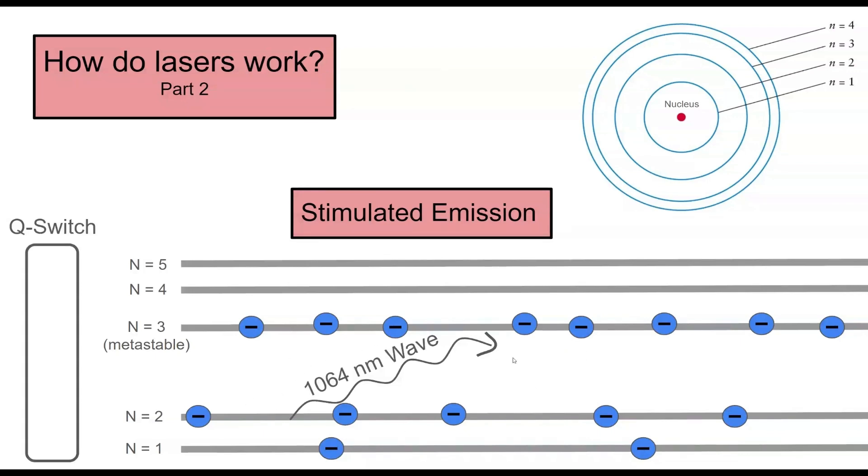Now this wavelength will hit these electrons and get absorbed and cause them to jump down an energy level. But since they're jumping down an energy level, they have to release their energy, and this becomes the light for the laser beam.